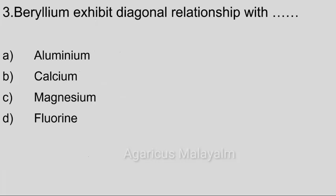Third question. Berlin exhibit diagonal relationship with dash. Answer options. Option A: Aluminium. Option B: Calcium. Option C: Magnesium. Option D: Fluorine. Correct answer: Option A, Aluminium.